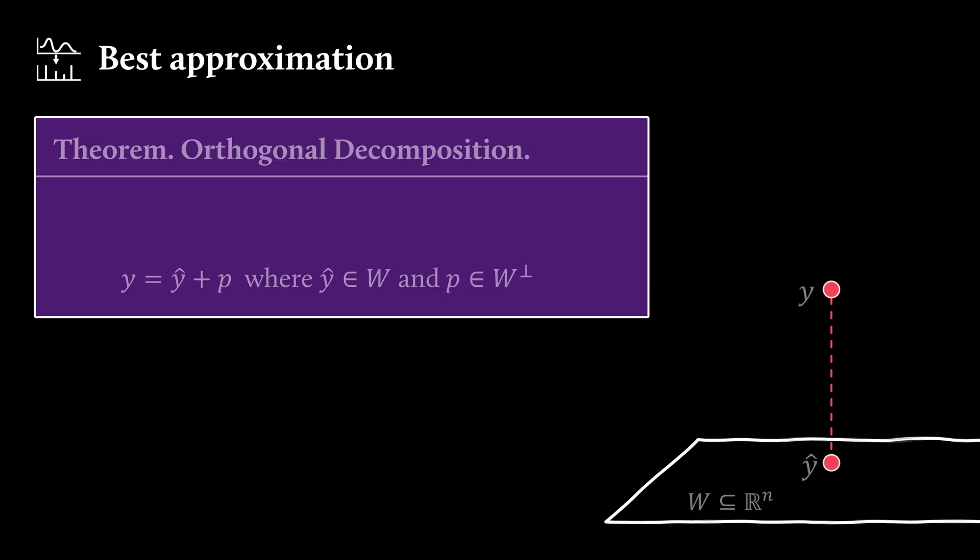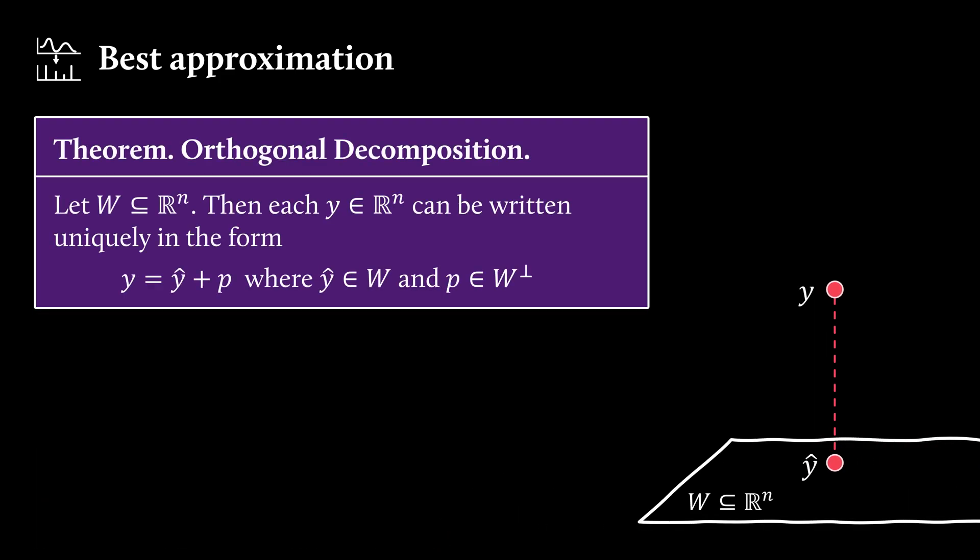Now the really cool thing is, if we go back for just a second to the Rn space, we have an orthogonal decomposition theorem that tells us each vector y can be written uniquely in the form y hat plus p, where y hat is living in w and p is in the orthogonal complement of w. That is, it's kind of perpendicular to it.